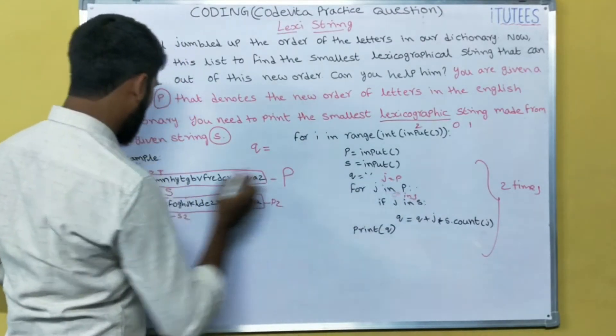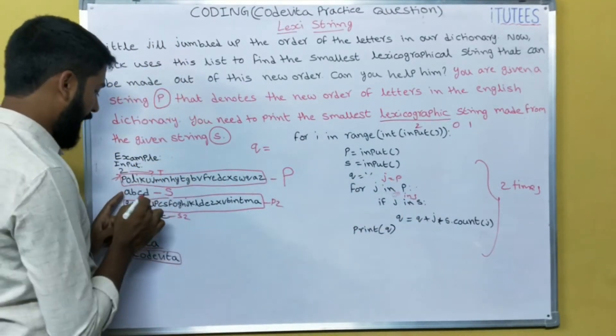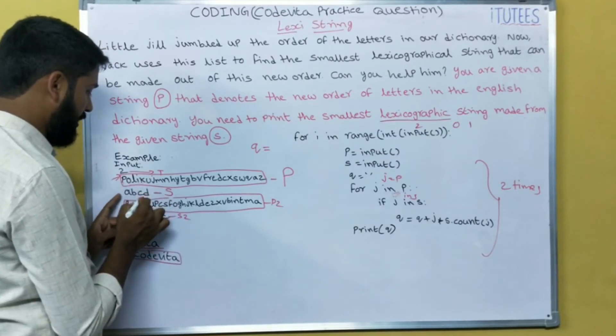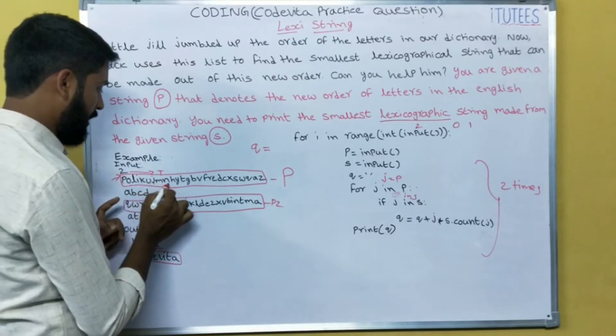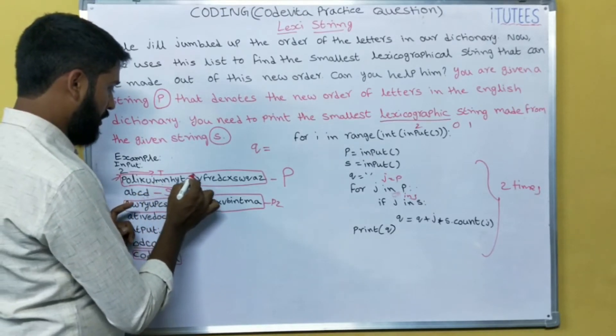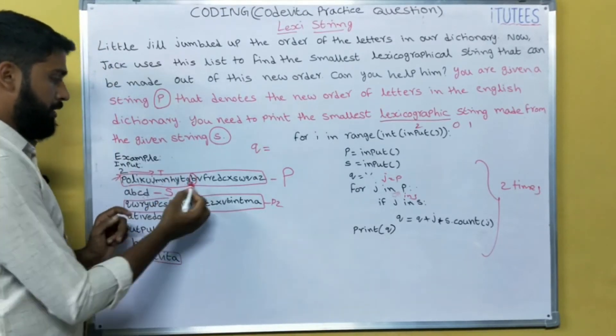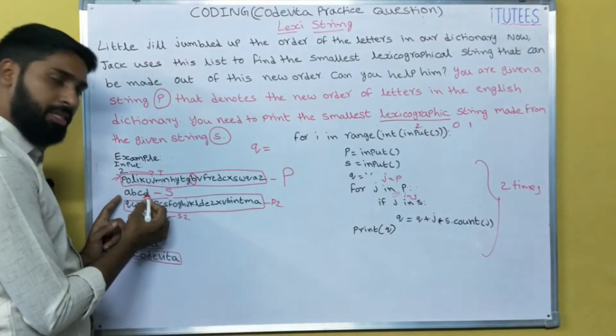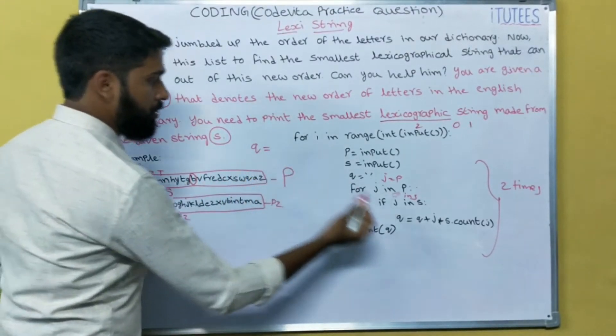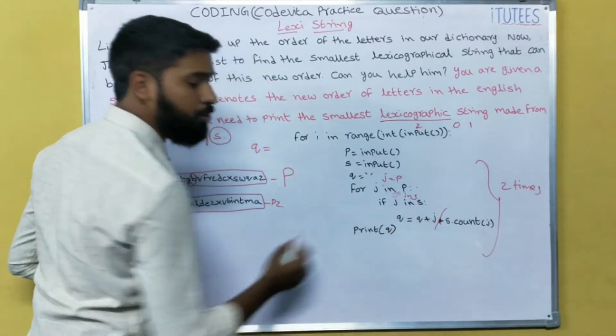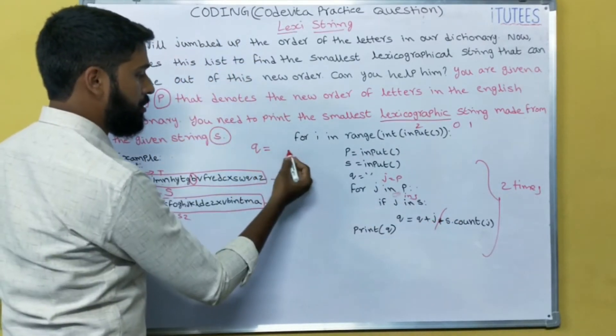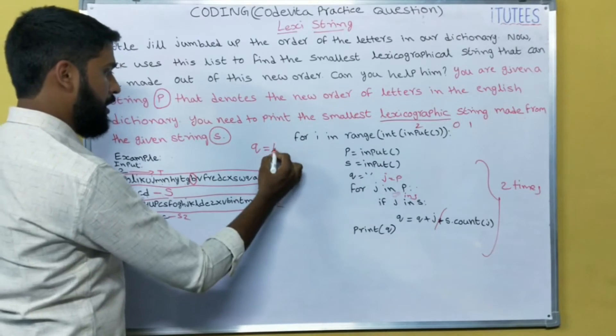Next go to I. I in S? No. K in S? No. U in S? No. J in S? No. So like that, you are going to here. B in S? Yes. So Q equals to, you forgot this part. Q equals to Q plus J. So that means Q equals to empty plus J. What is the J? B.